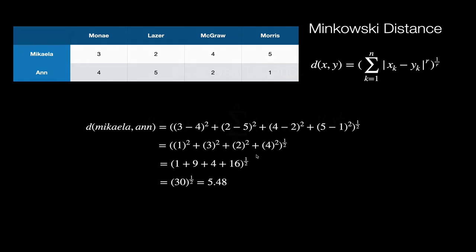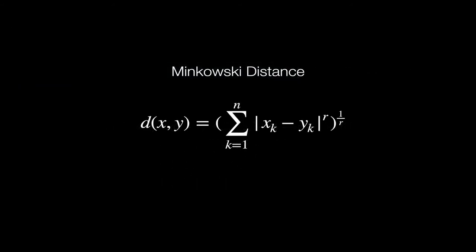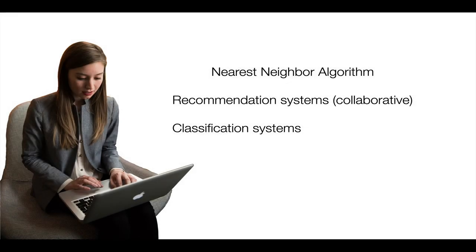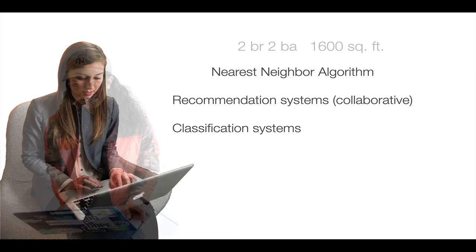What we've just seen is what's called a nearest neighbor algorithm. We're trying to find the closest to some person or object. This is often used in recommendation systems, called collaborative filtering. If we want to make a music recommendation for someone, we can see what other people with similar tastes like and make those recommendations to that person. We can also use it for classification systems.